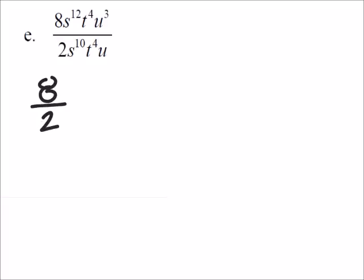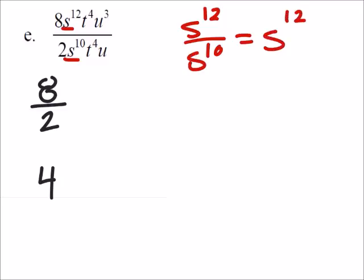Or 8 over 2 which would be 4. Then let's look at the s's right here. So we got s to the power of 12 divided by s to the power of 10, which is the same as s to the power of 12 minus 10, because